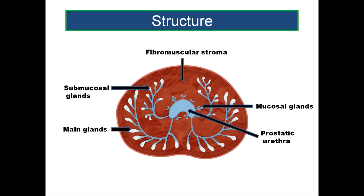Let us look at the structure of the prostate. Prostate is made up of 3 different structures — it is a fibromusculoglandular organ with fibers, muscles, and glandular tissue. The fibers and muscles form the fibromuscular stroma, which is present as a thick part in the anterior part of the gland and also intervenes between the glandular tissue in the posterior and lateral aspects.